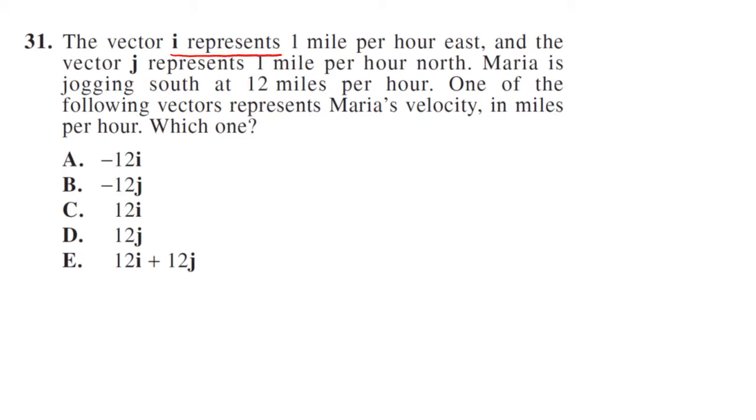Vector i represents one mile per hour east and j represents one mile per hour north. Maria is jogging south at 12 miles per hour, so she's going in the negative j direction. One of the following vectors represents Maria's velocity. The only one that has negative j is choice B, so it has to be B.